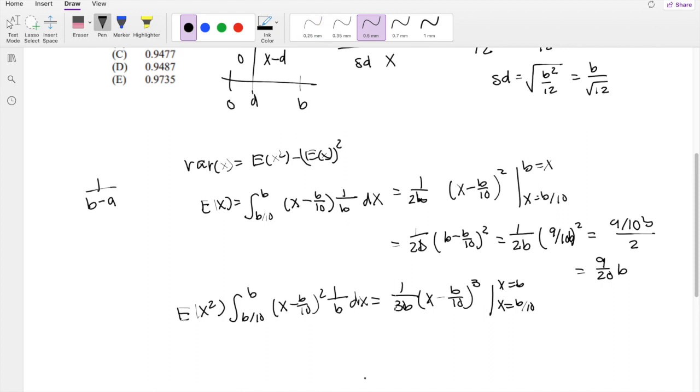When I plug in just B, I get 1 over 3B is equal to B minus B over 10 cubed, and then again, when I plug in B over 10, you get 0. So this is just equal to 9 over 10, oh, this one right here, I messed up here. So if it's 9 over 10 squared, that should be 9 over 10 whole thing squared, B squared over 2B. So when I cancel the B, I'm left with 1B. The numerator is 9 squared over 10 squared times 2B.